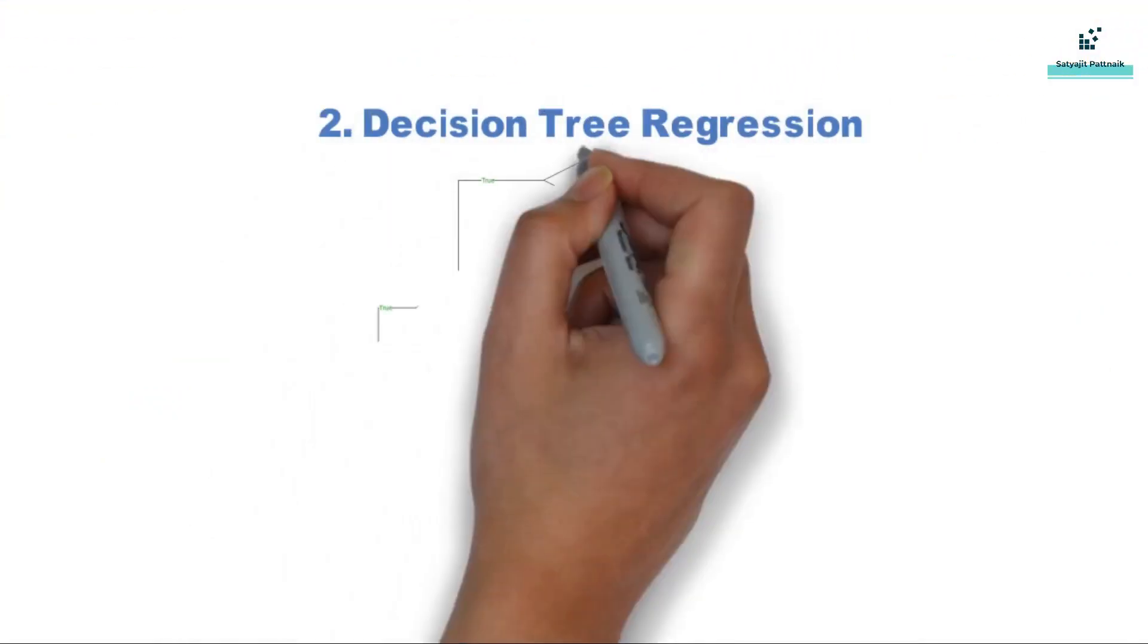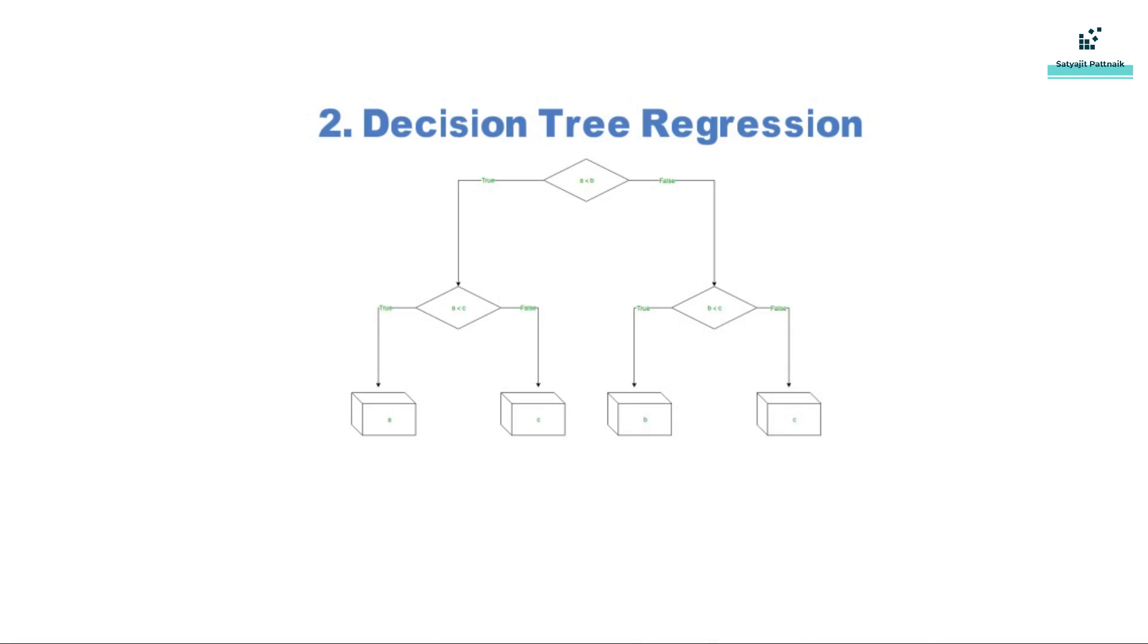It looks something like this, where each square is called a node, and the more nodes you have, the more accurate your decision tree will be in general.